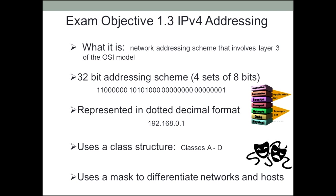We begin the discussion with IP. IP is strictly involved with the third layer of the OSI model — that is the network layer. IP is a 32-bit addressing scheme broken into four sets of eight bits. What you see below is a representation of an IP address. Usually when you see it written out it's represented in dotted decimal form, and 192.168.0.1 is exactly what that set of ones and zeros represents.